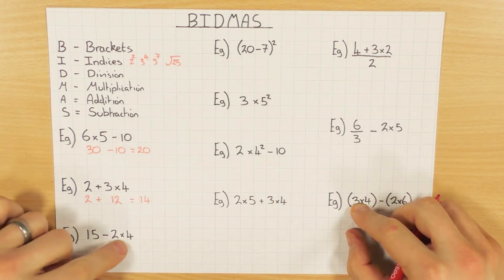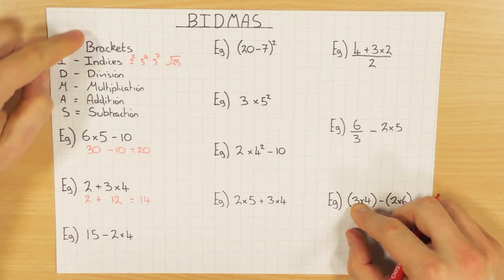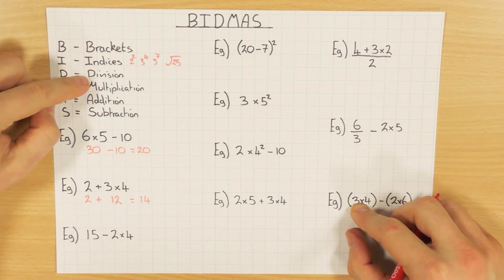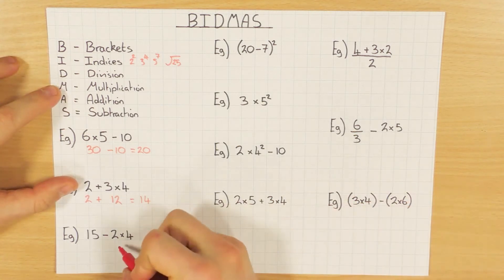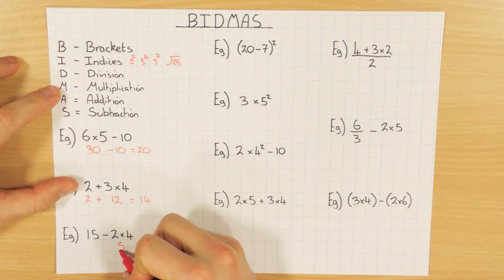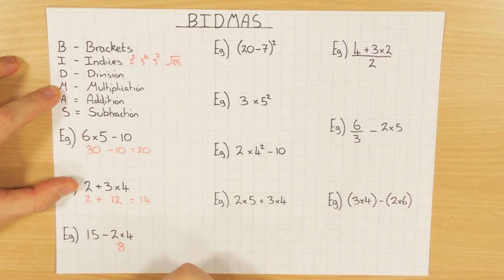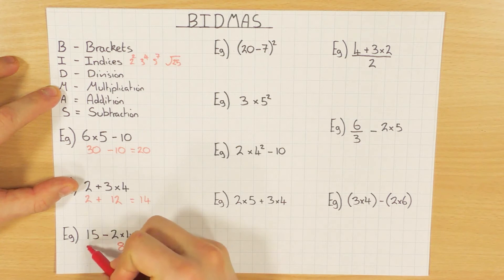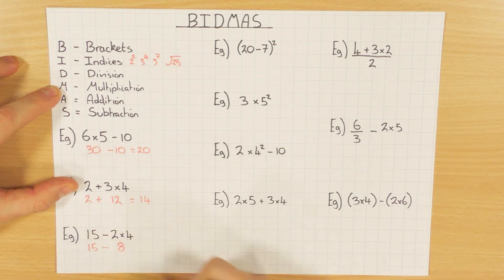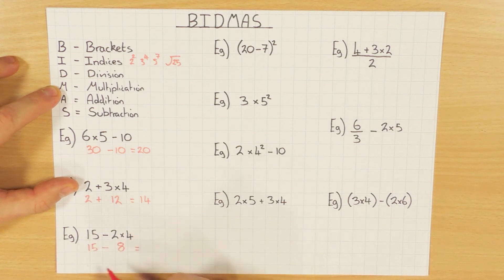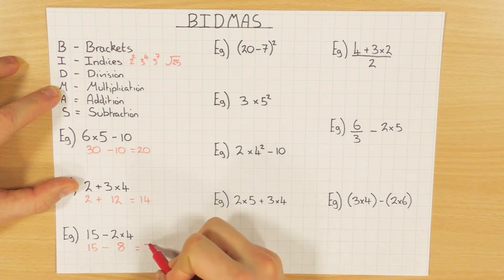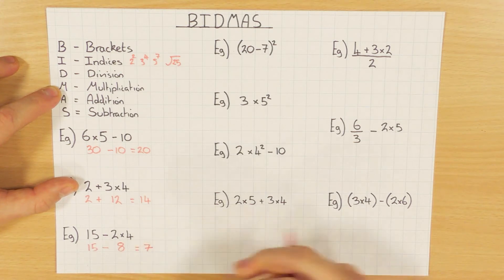Next one I've got a subtraction and multiplication again, so multiplication comes before subtraction. I do 2 times 4 which is 8, bring the 15 and the subtraction down, and then 15 take away 8 is 7.